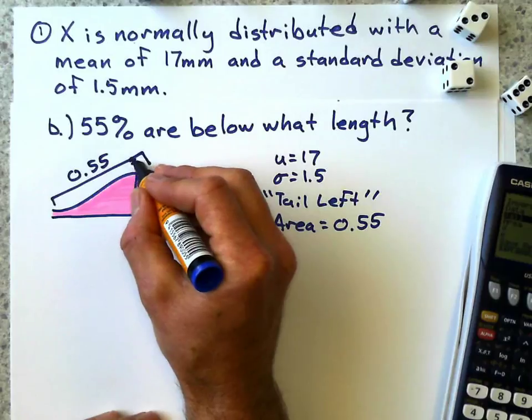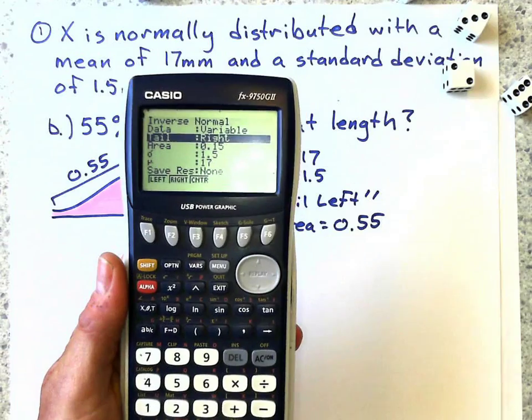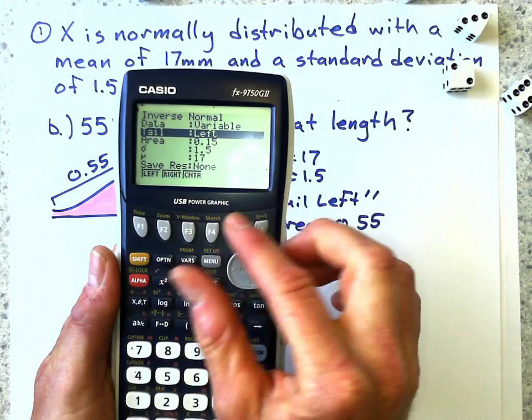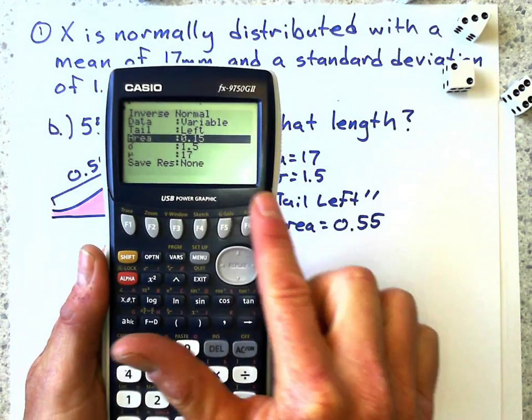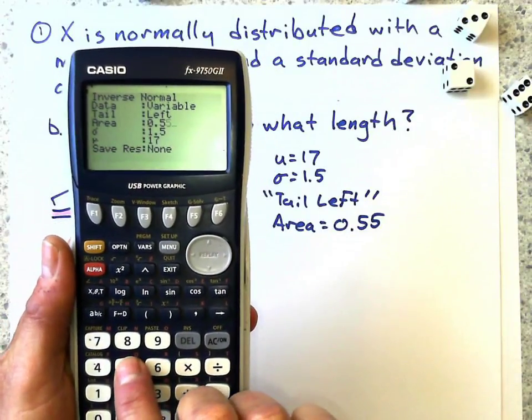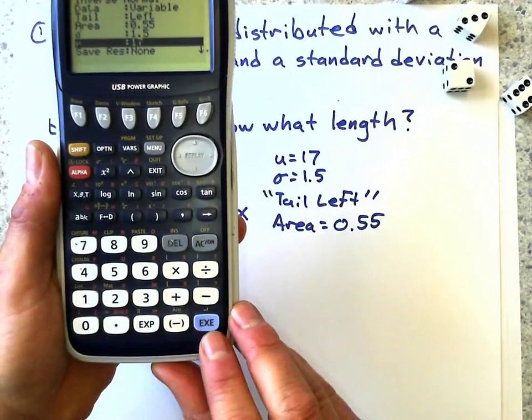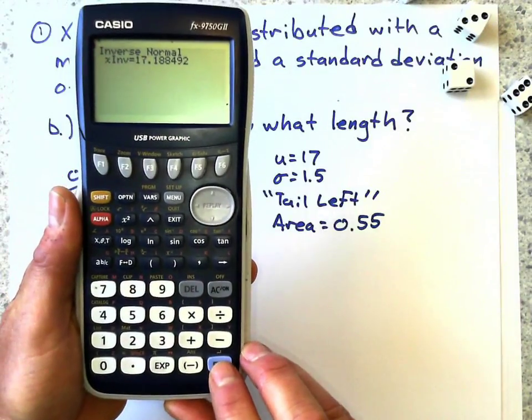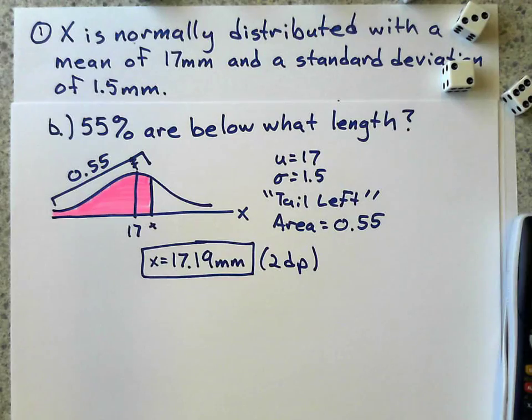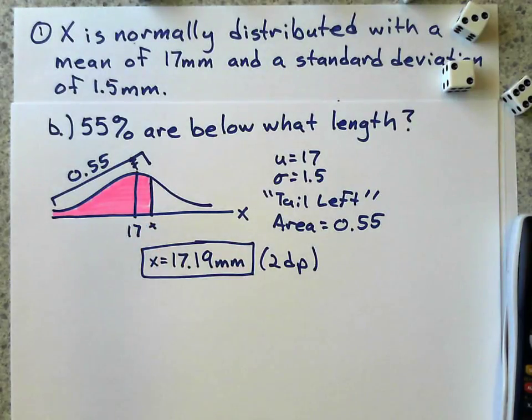Right there. So we just put that in, and everything's the same except for that tail left. The area is not 0.15, it's 0.55. Standard deviation is the same, mean is the same. Press execute, and we get our value right here. And we can just make sure if it's above the mean that it's more than 17, which it is, just.